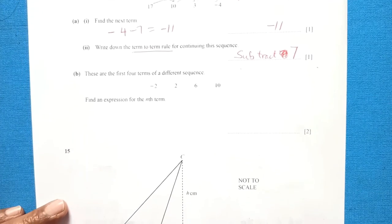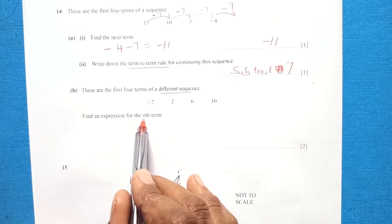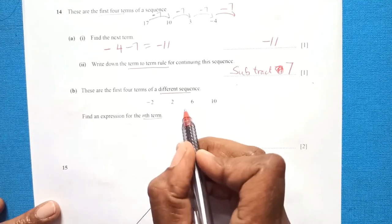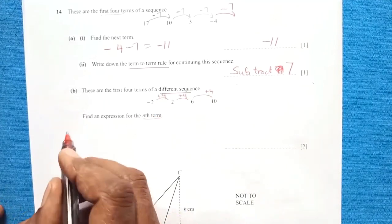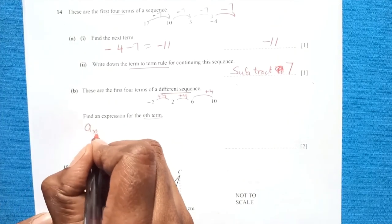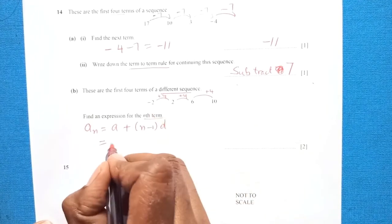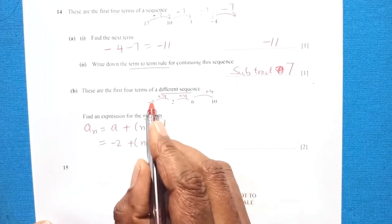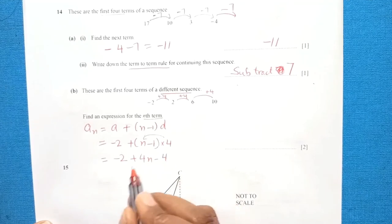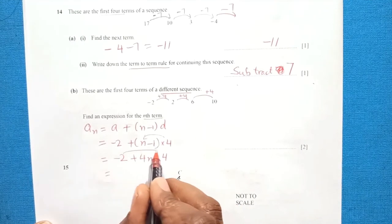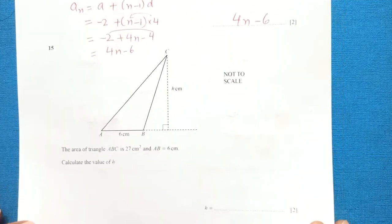Part b: find an expression for the nth term of a different sequence. The sequence increases by 4 each time, so d = 4. The first term a = −2. Using the formula: nth term = a + (n − 1)d = −2 + (n − 1) × 4 = −2 + 4n − 4 = 4n − 6. So the expression is 4n − 6.